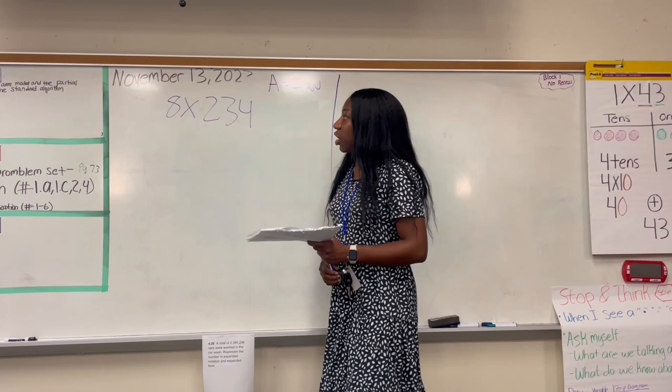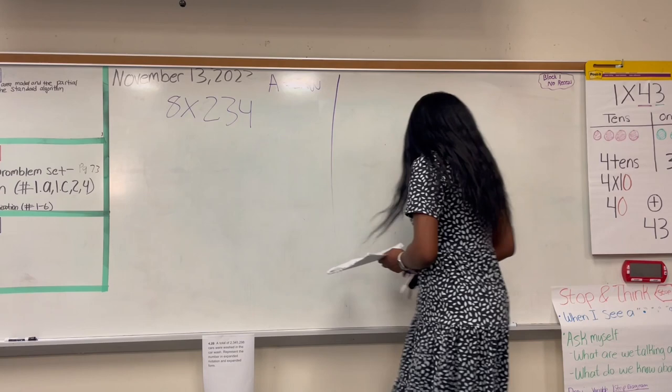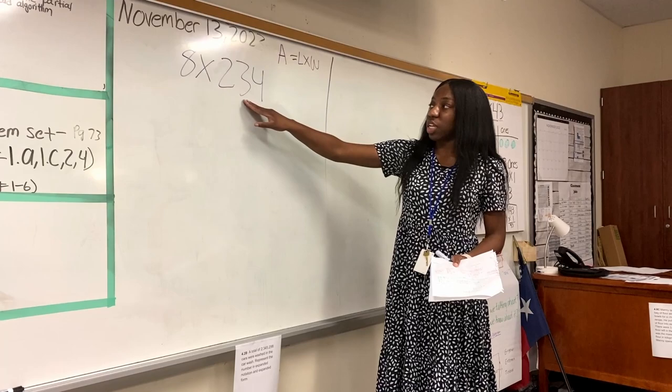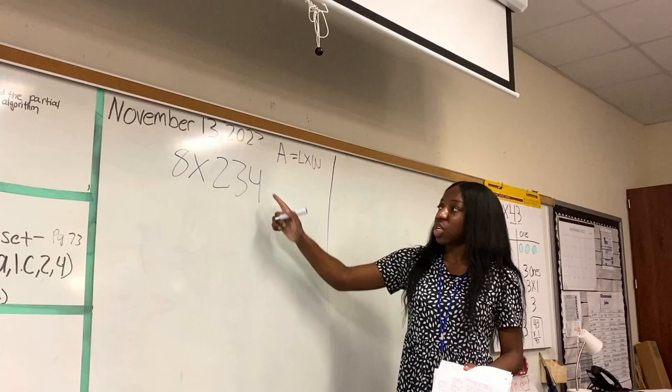All right, so the first thing I want you to write in your journal is 8 times 234. And we're going to label this. So I'm going to label each, I'm going to break up this three digit number. And I'm going to break it up into three different parts, the ones, tens, and hundreds.